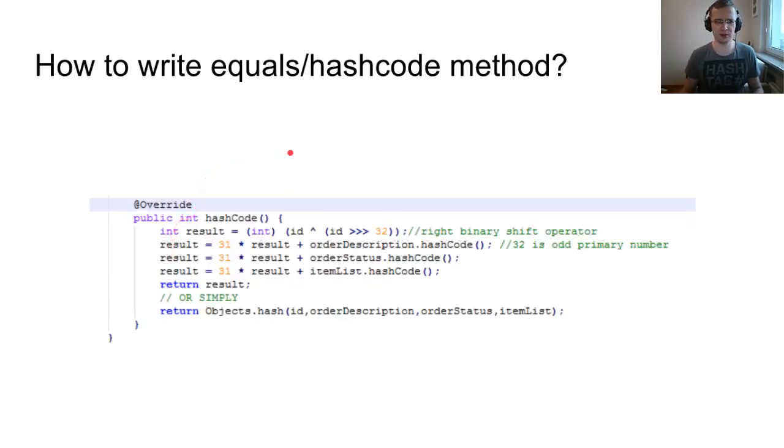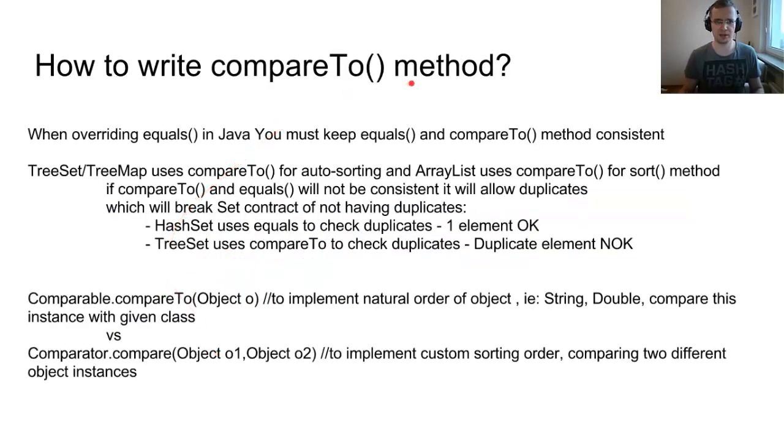How to write the hash code method? We can simply use the Objects.hash method and put all the parameters here, or we can do this manually, but I recommend to use the second method.